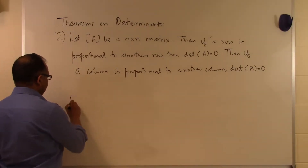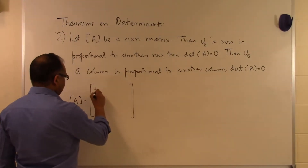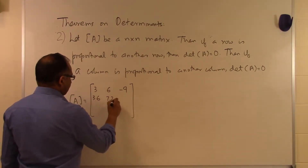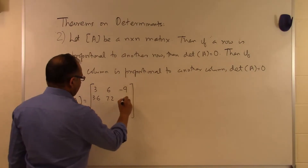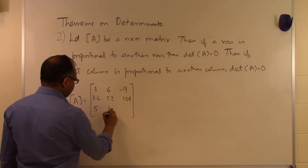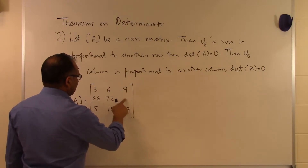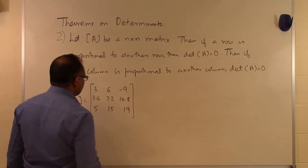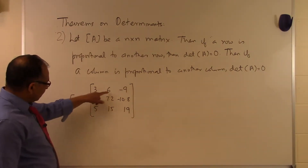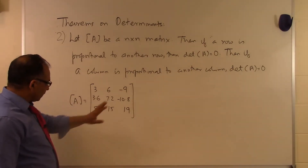Let's look at an example. Suppose matrix A is: row one is 3, 6, -9; row two is 3.6, 7.2, -10.8; and row three is 5, 15, 19. That is the A matrix.